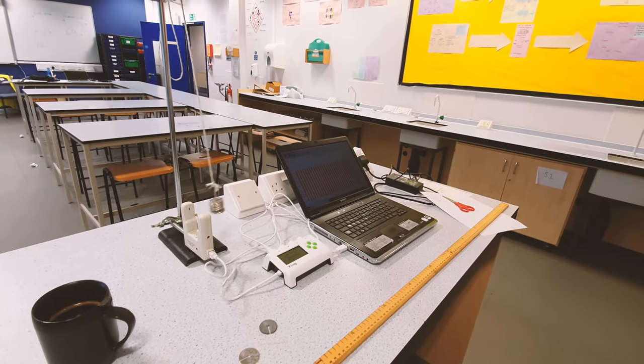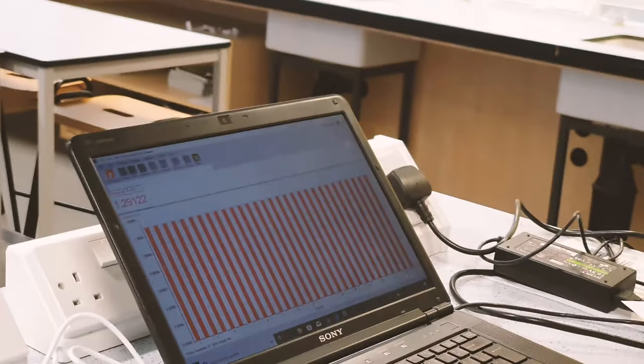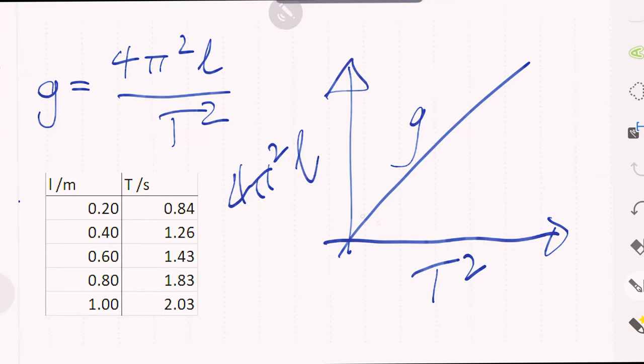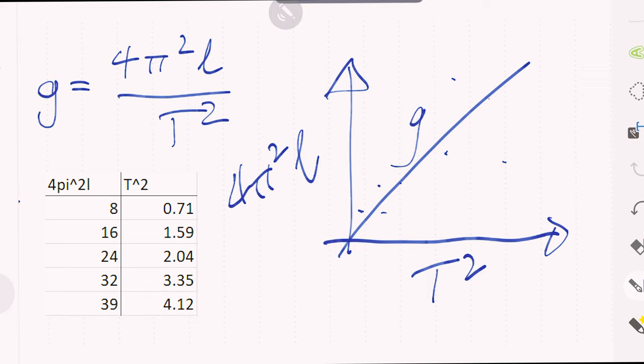The usual way to get accuracy when you're measuring the time period of a pendulum is to just measure 10 full swings and then divide by 10. Here's the data for this experiment when I conducted it with manual timing, so doing 10 full swings and divided by 10.